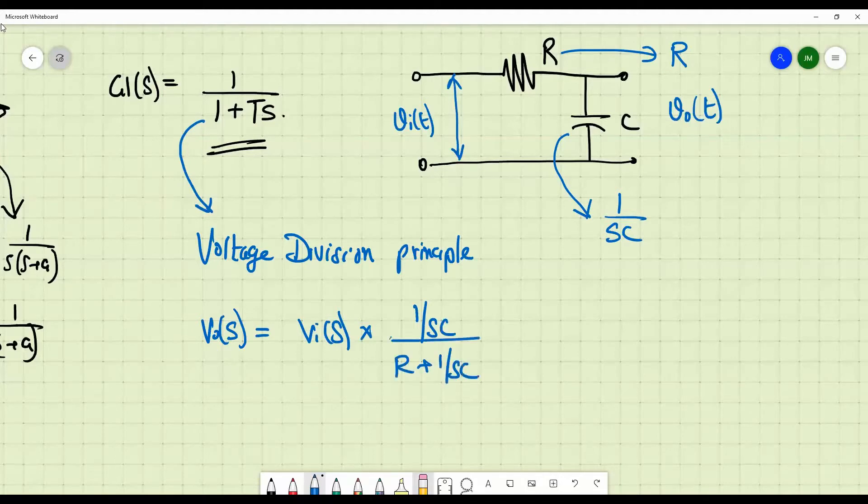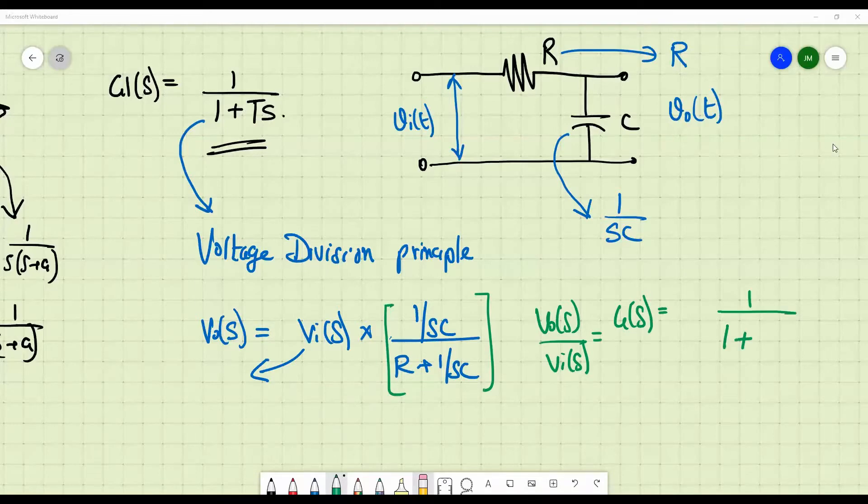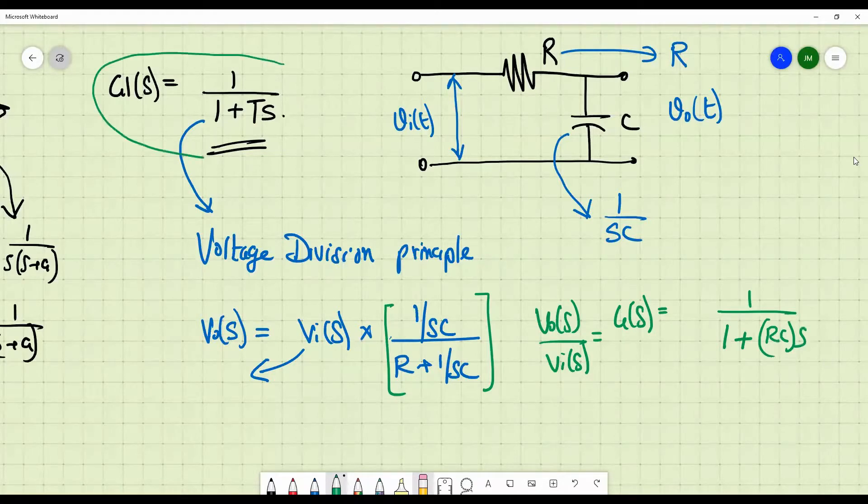If I bring this thing here, you get V0 of S divided by V of S that is nothing but the transfer function G of S. If you try to simplify this thing 1 by SC by R plus 1 by SC, you will get 1 by 1 plus RCS. And if you compare it with this transfer function, you will notice that T is equal to RCS.